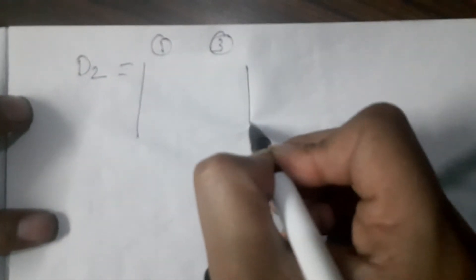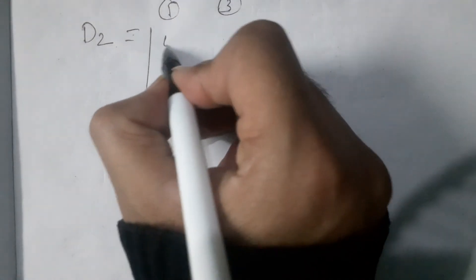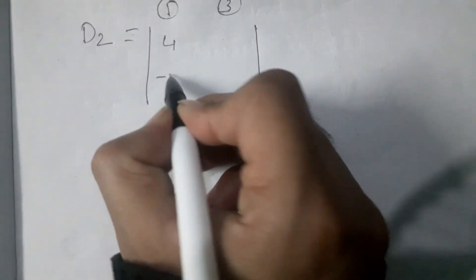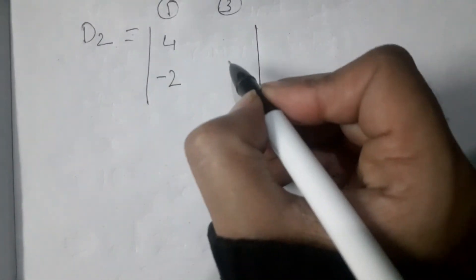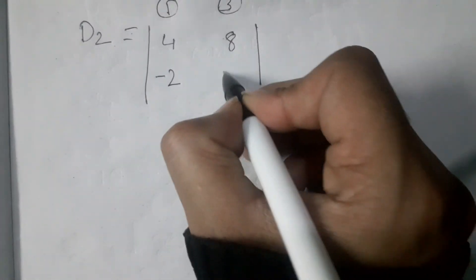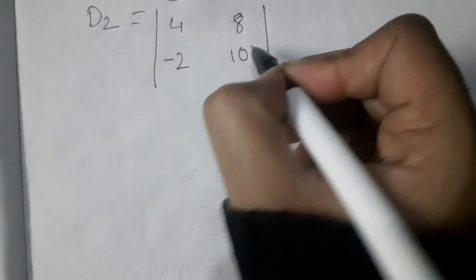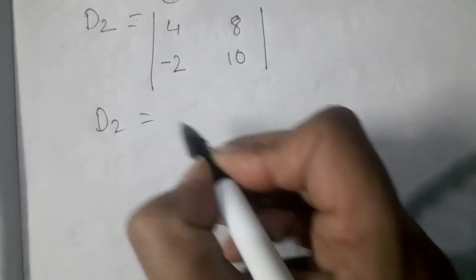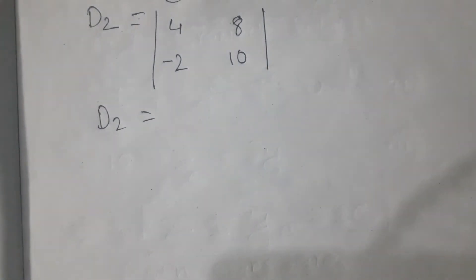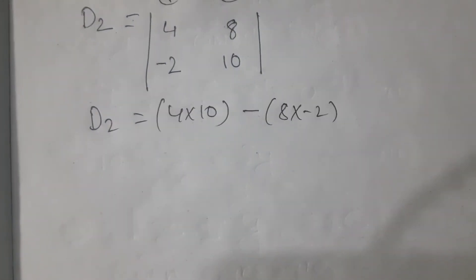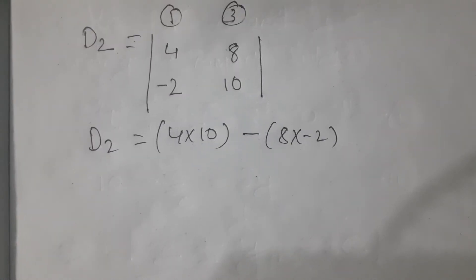For D2, the combination uses the 1st and 3rd columns. So the first column is 4, minus 2 and the constant column is 8, 10. Therefore D2 equals 4 into 10 minus 8 into 2, which gives 40 minus 16 equals 24. So D2 equals 24, but we note D2 equals 56 in the next step.